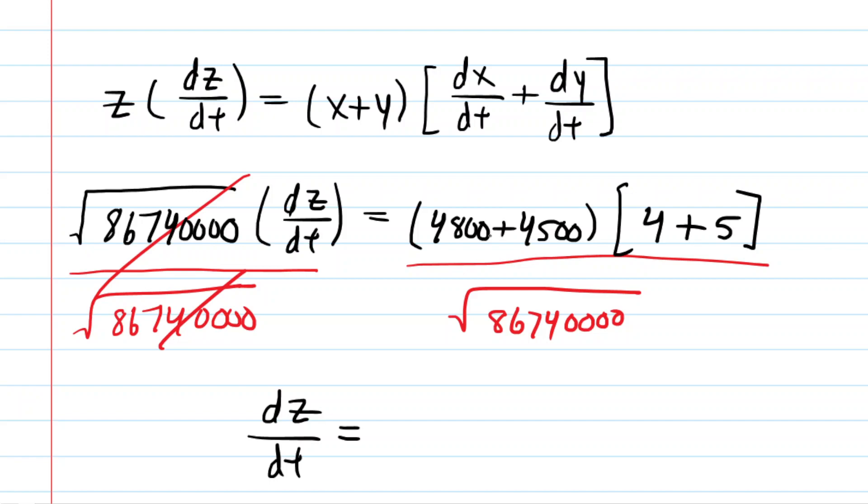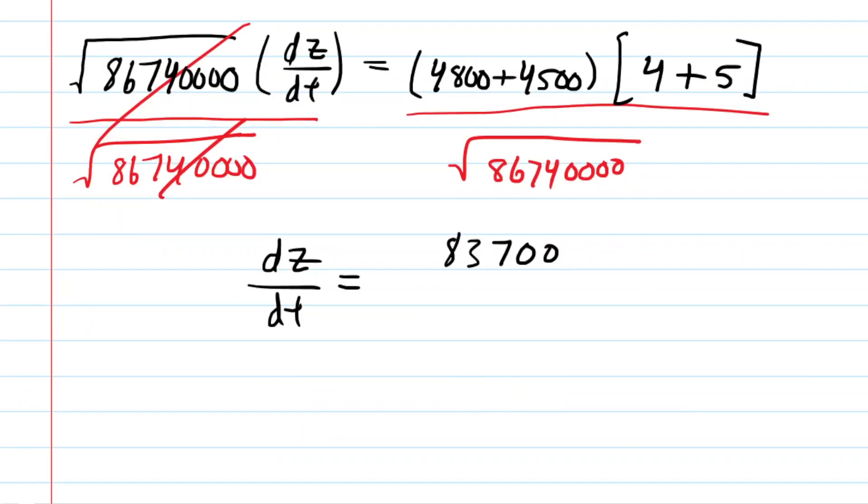If you work out the numerator, you're going to have that 9,300 times 9, which is 83,700. And then in the bottom, you can get a little fancy here because you could split that up into the square root of 86,74 times the square root. Let's see, one, two, three, four zeros, so 10,000. Of course, the square root of 10,000 is just 100. So actually this is just 100 here, and then that's nice because then you can reduce by canceling those two zeros and those two zeros right there. So just a little bit of fancy tricks there gives us 837 over the square root of 86,74.